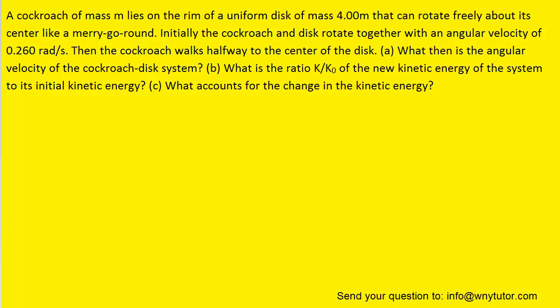In order to solve part A, we're going to use the concept of conservation of angular momentum. So here we have the cockroach labeled M1, the disk can be labeled M2, and then the radius of the disk is shown as a capital R.